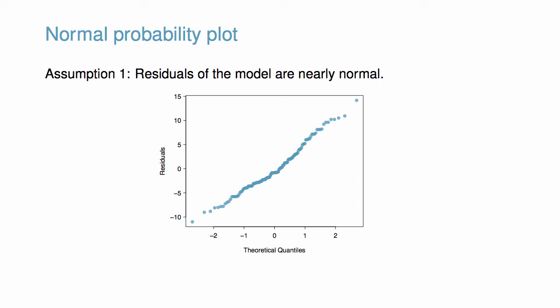In a normal probability plot for residuals, we tend to be most worried about residuals that appear to be outliers, since these indicate long tails in the distribution.